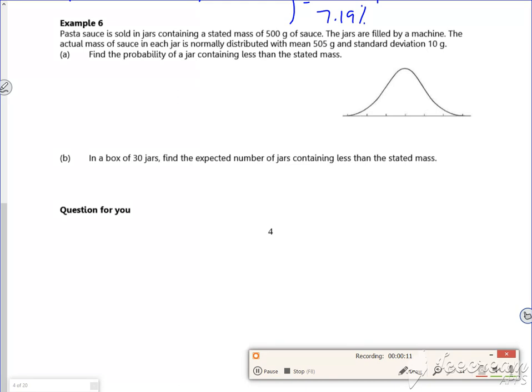It says a pasta sauce is sold in jars containing a stated mass of 500 grams. The jars are filled by a machine. The actual mass is normally distributed with a mean of 505 and a standard deviation of 10. Find the probability that a jar contains less than the stated mass.